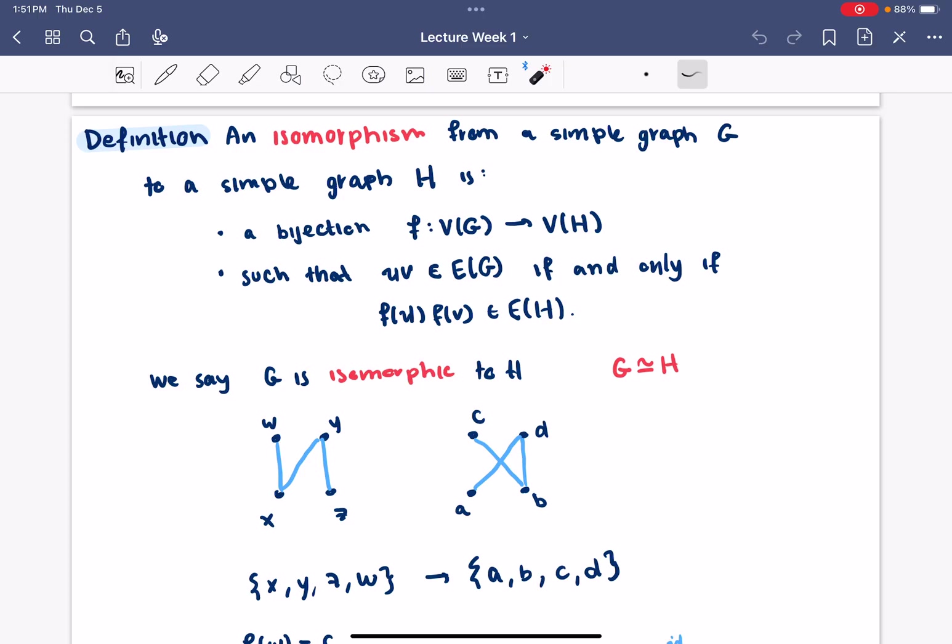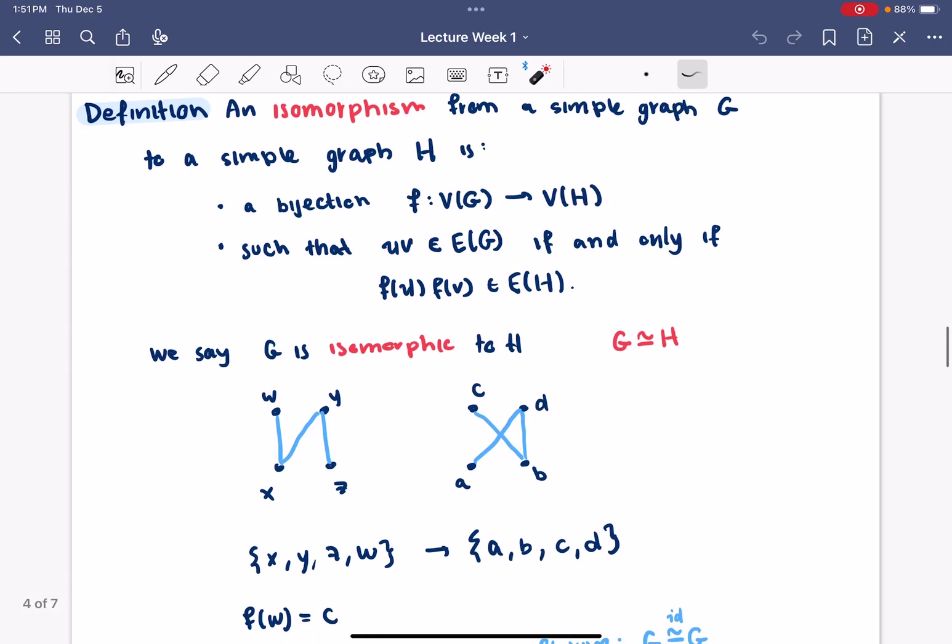Then, we gave the definition of an isomorphism between two simple graphs. An isomorphism between a simple graph G and a simple graph H is a bijection of the two vertex sets such that an edge is present in the first graph if and only if the image of that edge is present in the second graph. In that case, we would say that G is isomorphic to H.